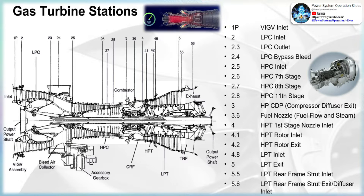The purpose of the gas turbine determines the design so that the most desirable split of energy between the thrust and the shaft work is achieved. The fourth step of the Brayton cycle — cooling of the working fluid — is omitted, as gas turbines are open systems that do not reuse the same air.